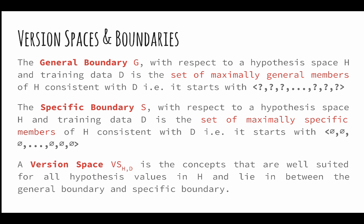The general boundary G with respect to a hypothesis space H and a training data D is a set of maximally general members of H consistent with D. That is, it starts with the question marks. A specific boundary S with respect to the hypothesis space H and a training data D is a set of maximally specific members of H consistent with D. That is, it starts with phi's. A version space is the concepts that are well suited for all hypothesis values in H and lie between the general boundary G and the specific boundary S.